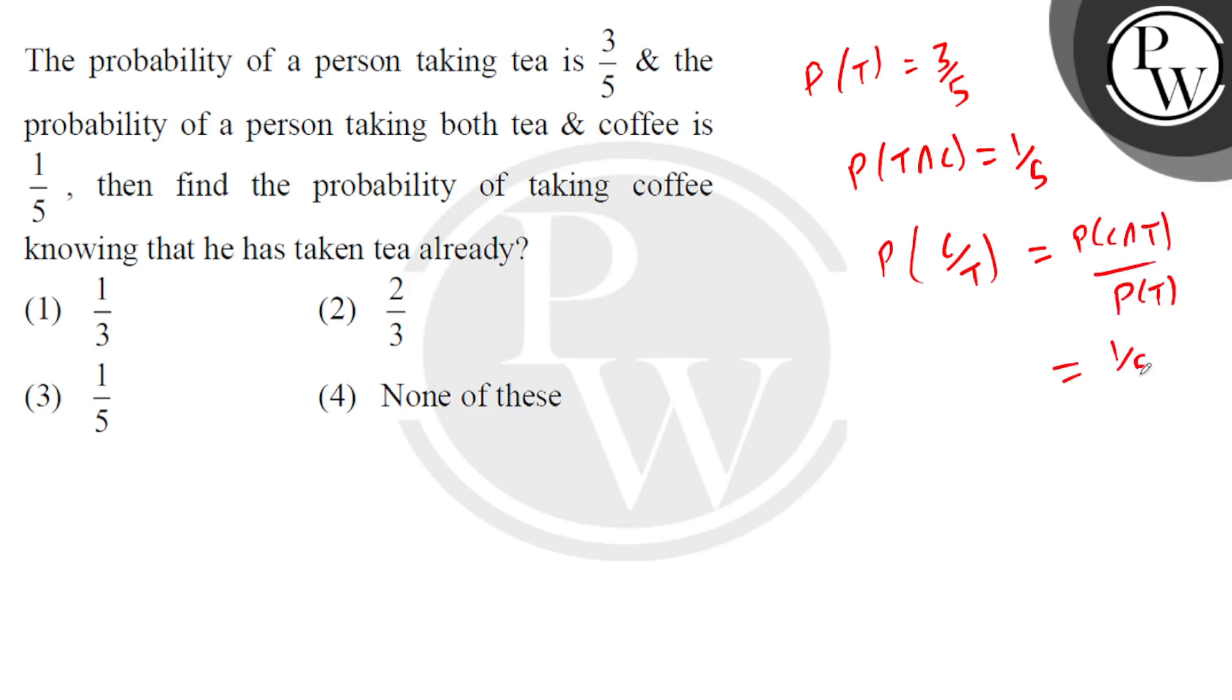Now putting the values: 1/5 divided by 3/5. So the required probability comes out as 1/3.